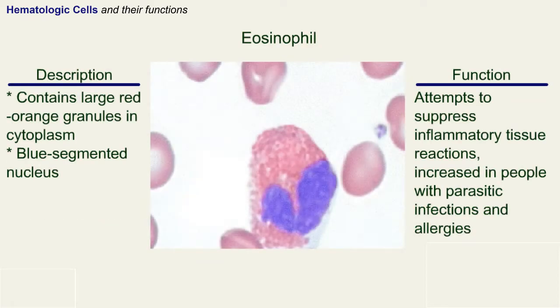Eosinophil: a white blood cell that contains large red-orange granules in the cytoplasm and has a blue segmented nucleus.